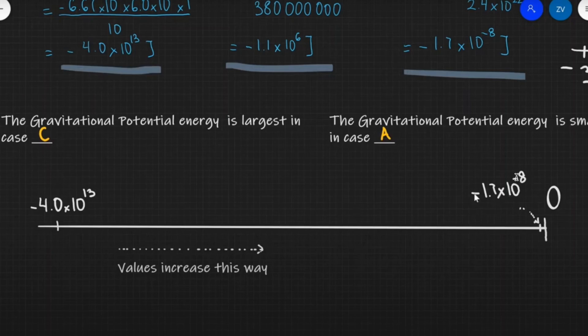Also remember that the gravitational potential actually increases with distance — it gets closer and closer to zero, reaching a zero value at infinity, becoming less negative.